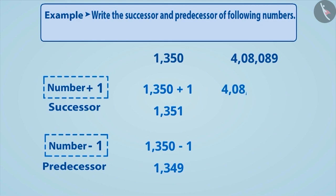Similarly, by adding 1 to 408089, we get its successor 408090, and by subtracting 1 from it, we get its predecessor 408088.